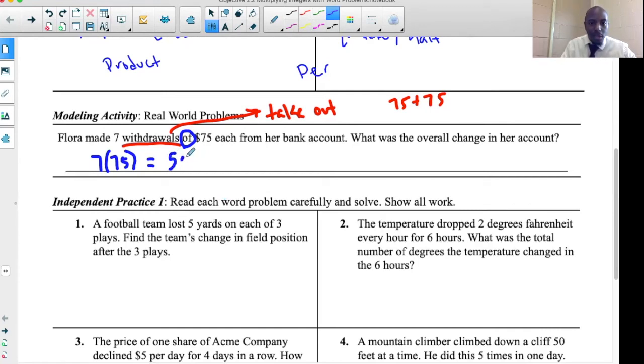That's going to give us $525. This is money we're talking about so you can put a money sign in front of this. But what was the overall change in her account? I could leave that as that, but I'm actually going to put her account changed by $525 and I'm going to put a negative symbol there.